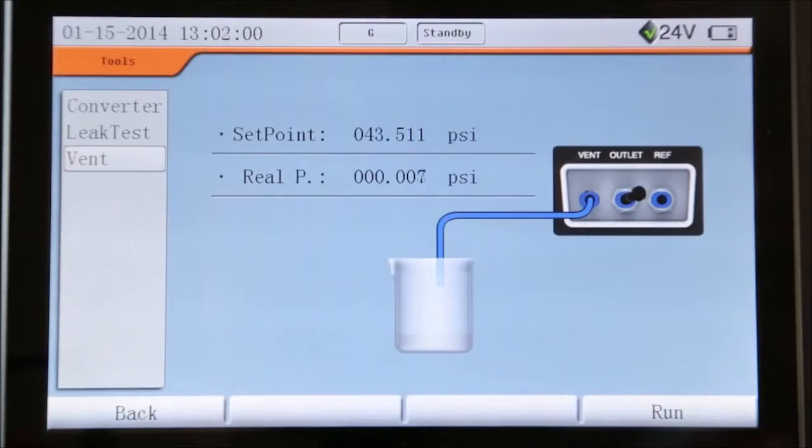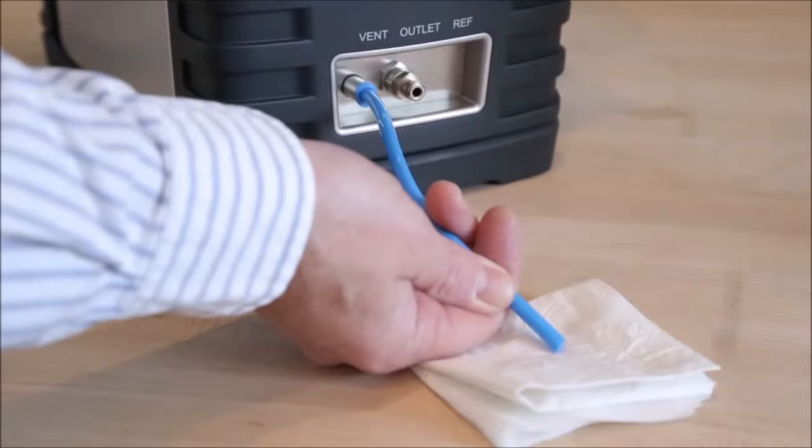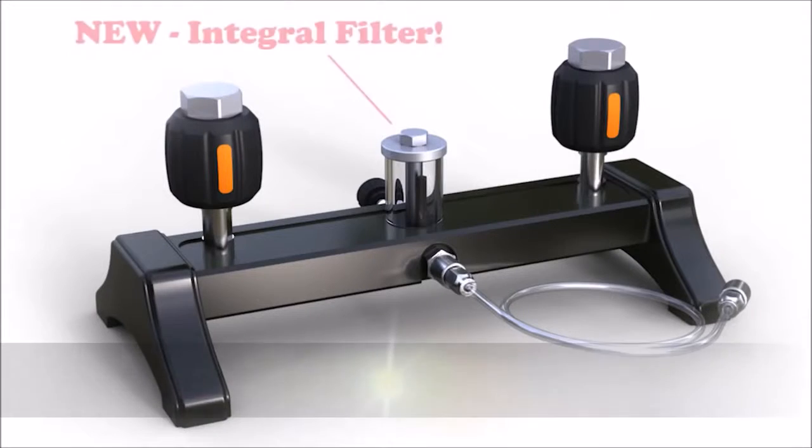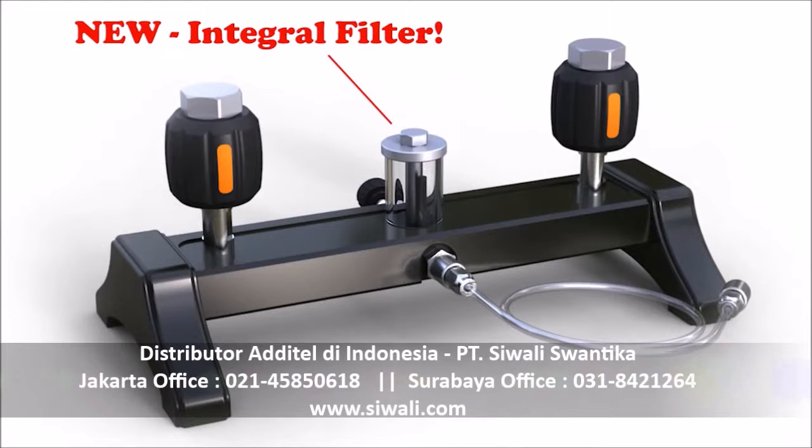To prevent contamination from getting into the calibrator, each 761 has a built-in filter and liquid trap. A purging routine will expel any collected contamination out of the vent port of the calibrator. The pressure manifolds also include a built-in external filter that can be cleaned or changed.